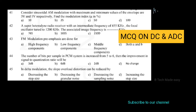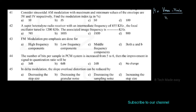The modulation index mu equals (Vmax minus Vmin) divided by (Vmax plus Vmin). Substituting Vmax = 3V and Vmin = 1V: (3 minus 1) divided by (3 plus 1) = 2 divided by 4, which equals 0.5.